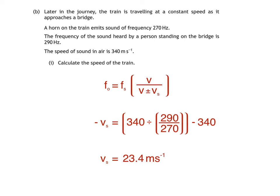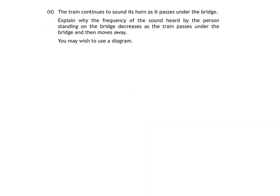I strongly suggest that you try working this out for yourself, as it's a bit tricky mathematically. Finally, we've got part B2. The train continues to sound its horn as it passes under the bridge. Explain why the frequency of the sound heard by the person standing on the bridge decreases as the train passes under the bridge and then moves away.